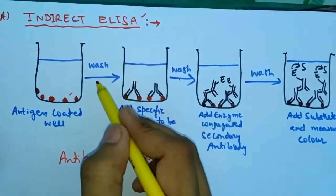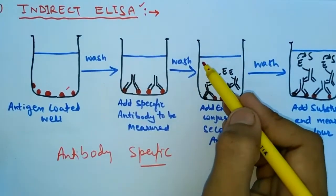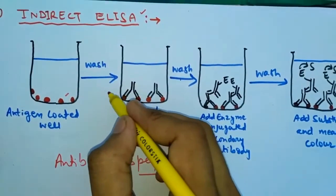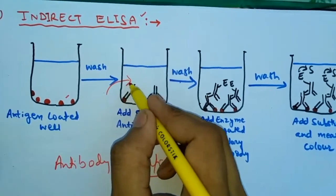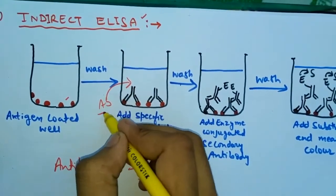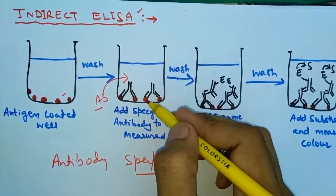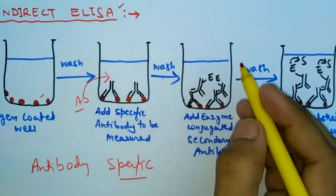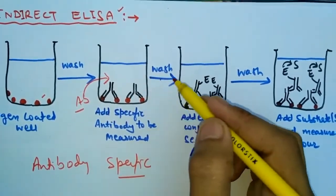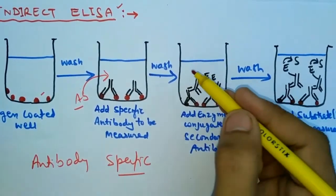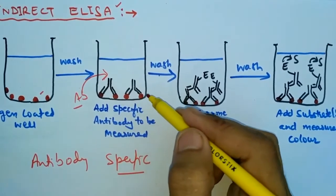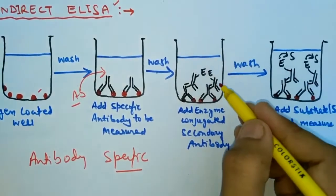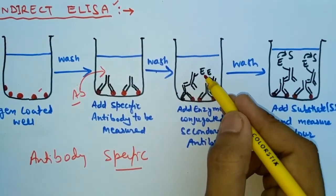We use antigen-coated wells, then wash with distilled water, then add the specific antibody to this type of antigen. Upon addition of the antibody, a cross-reaction occurs and an antigen-antibody complex forms. Next, we wash the unbound antibody with distilled water and an immobilized complex is produced.